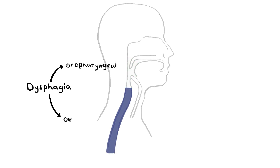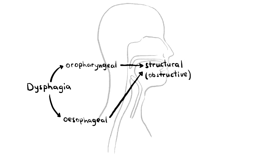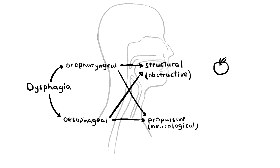There are two main types of dysphagia: oropharyngeal and esophageal. These two types are further classified as either structural — meaning obstructive causes — or propulsive, meaning neurological causes. A clinical pearl: dysphagia to solids may be indicative of a structural etiology, whereas dysphagia to either liquids alone or the combination of liquids and solids is likely a propulsive, neurological cause.